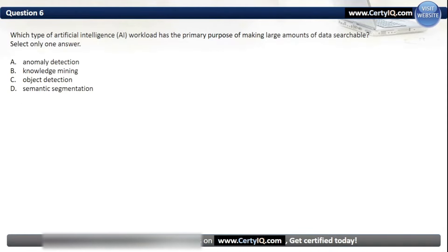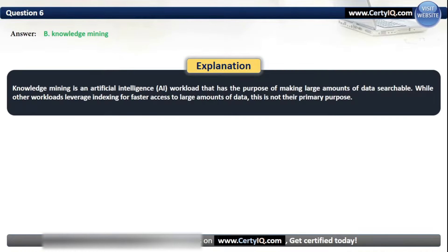Question 6. Which type of AI workload has the primary purpose of making large amounts of data searchable? Options: A. Anomaly detection, B. Knowledge mining, C. Object detection, or D. Semantic segmentation. The correct answer is B. Knowledge mining. Knowledge mining is an artificial intelligence workload that has the purpose of making large amounts of data searchable. While other workloads leverage indexing for faster access to large amounts of data, this is not their primary purpose.